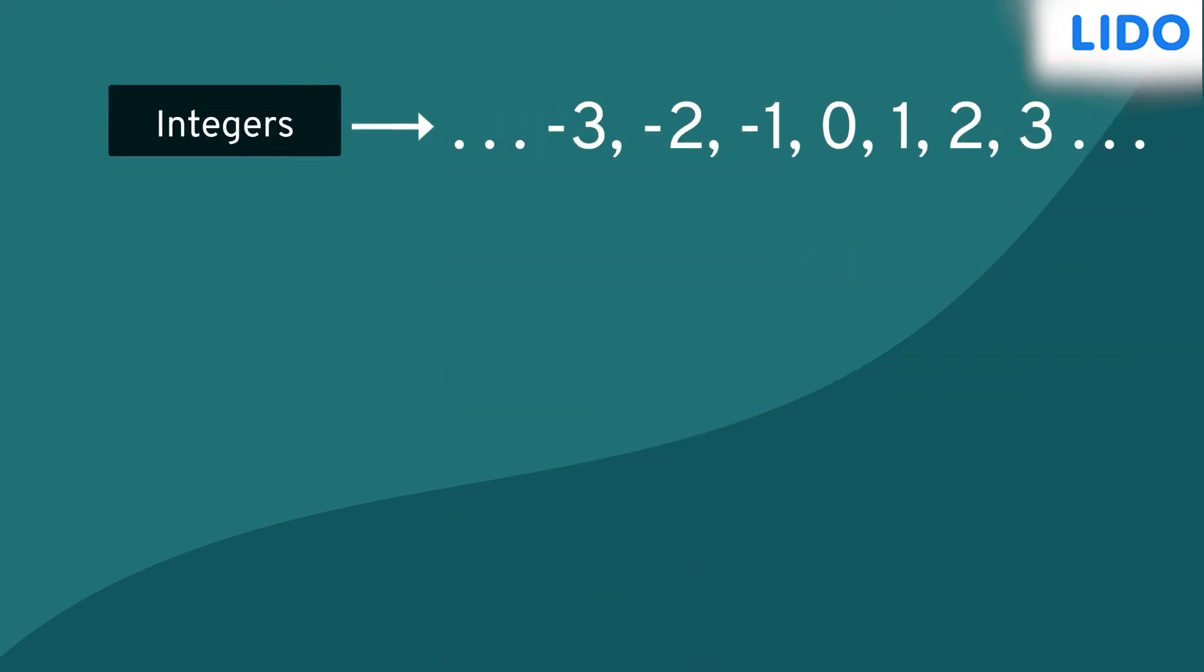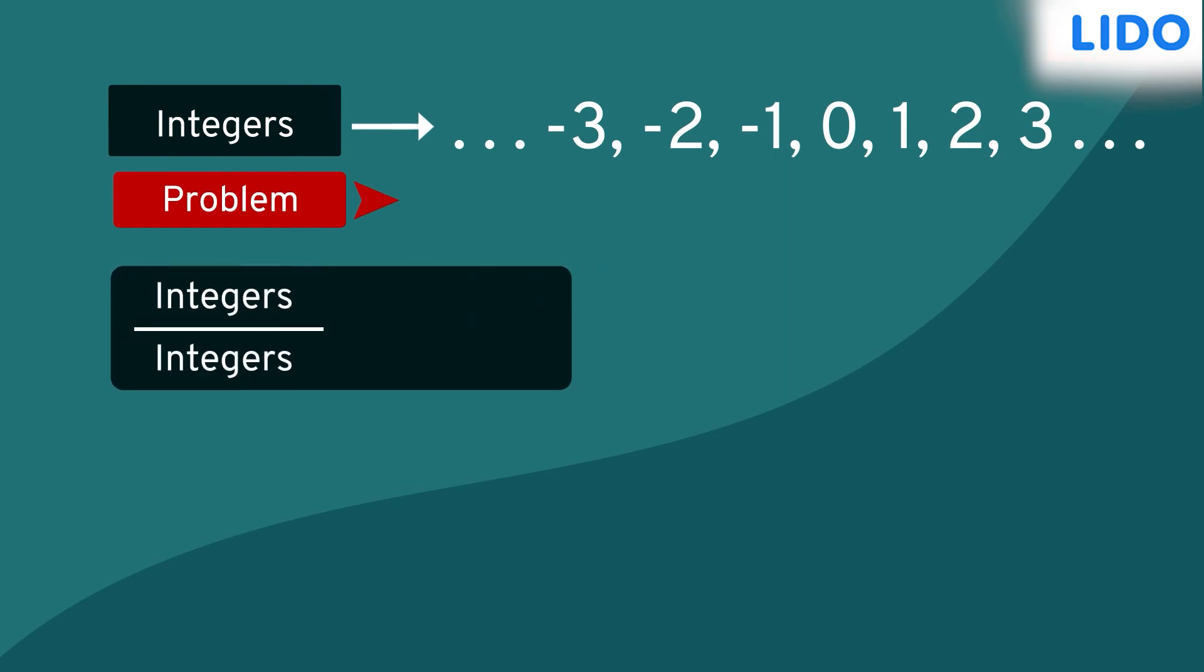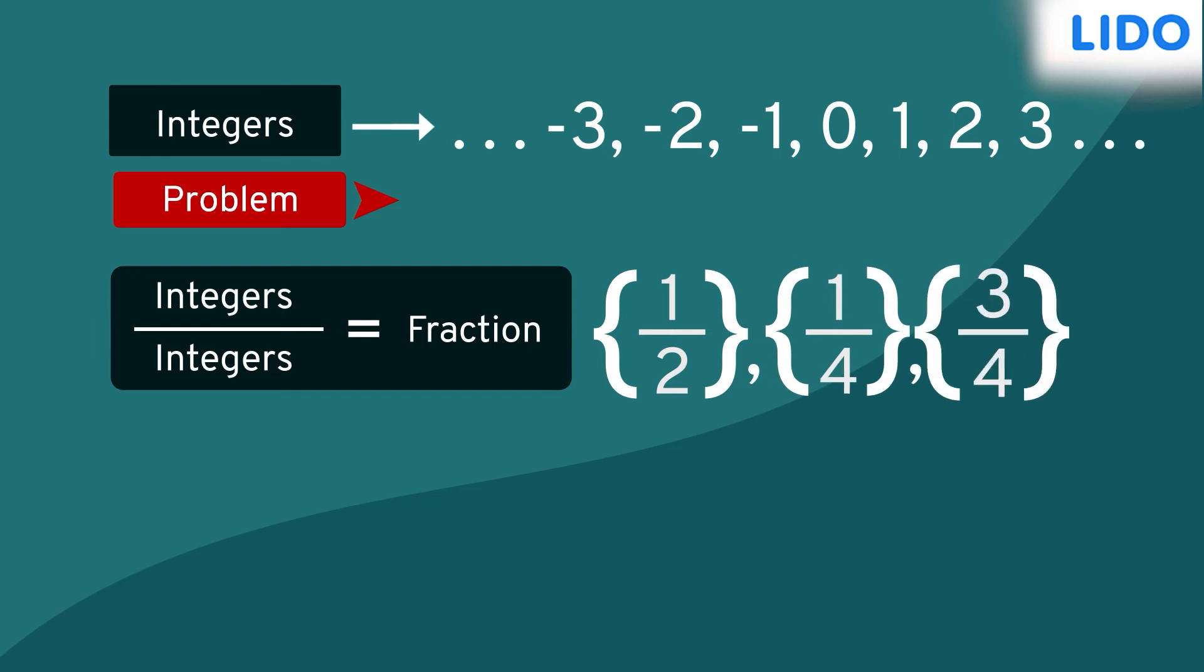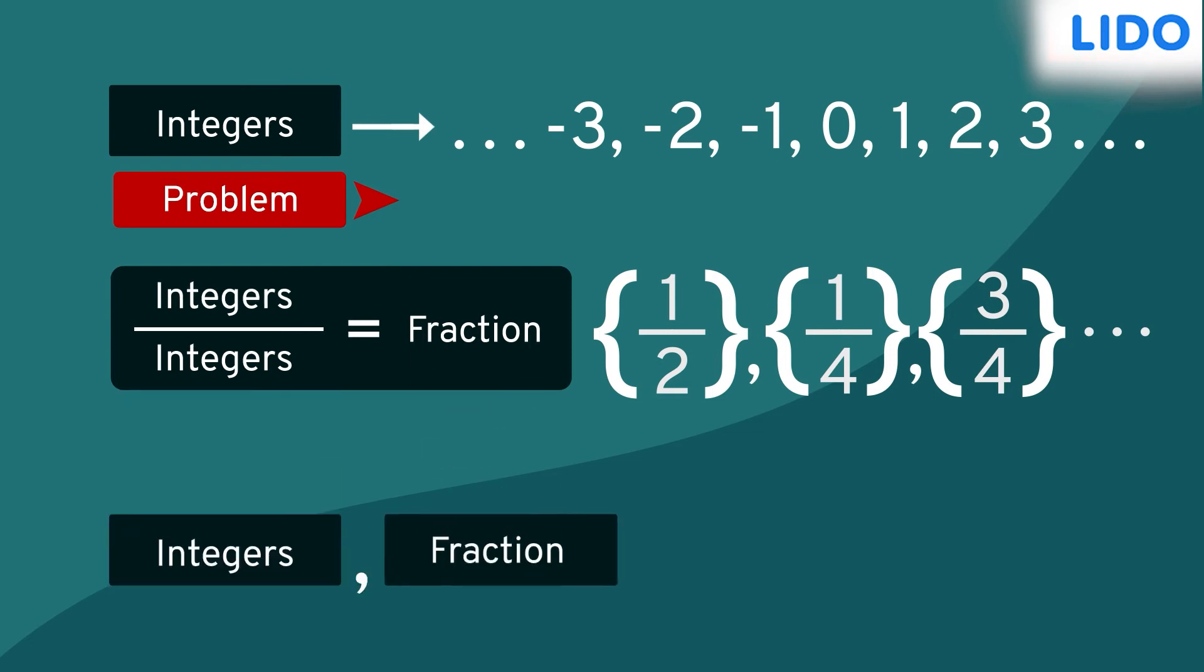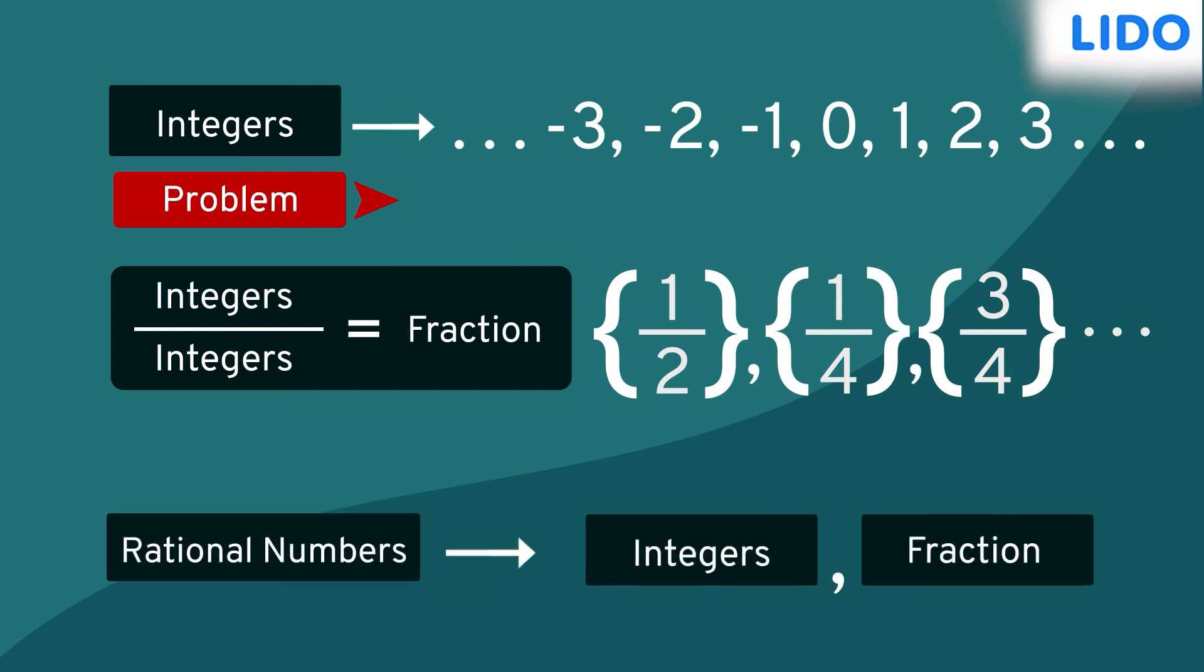Integers too had their shortcomings. Dividing two integers sometimes resulted in fractions like 1 over 2, 1 over 4, 3 over 4, and so on. But fractions were not included in integers. This led to the formation of a new system of numbers to consist of both integers and fractions. This new set of numbers is what we now know as rational numbers.